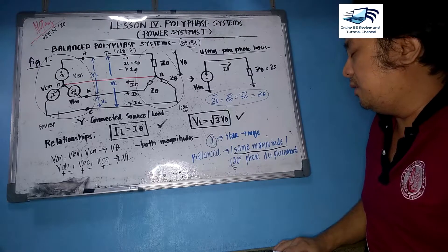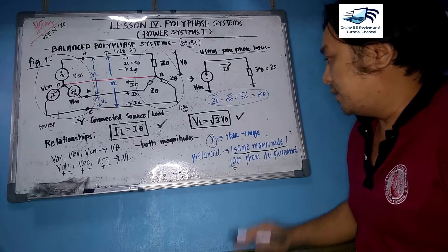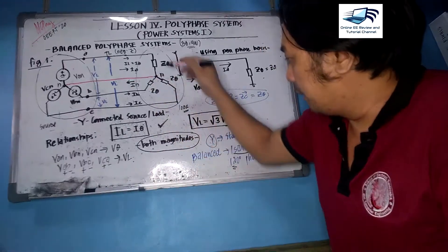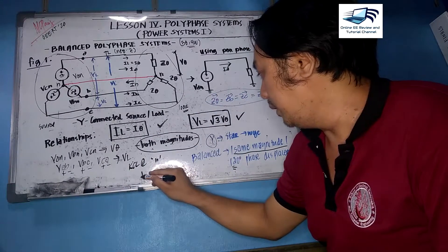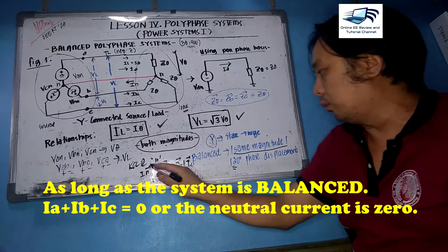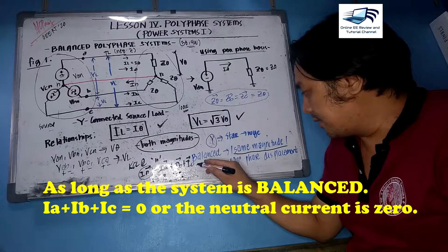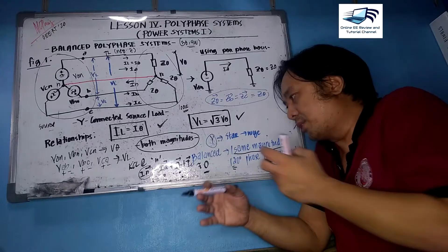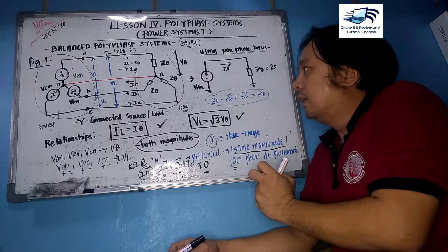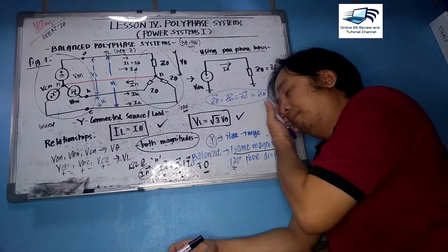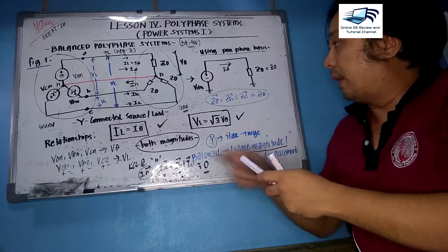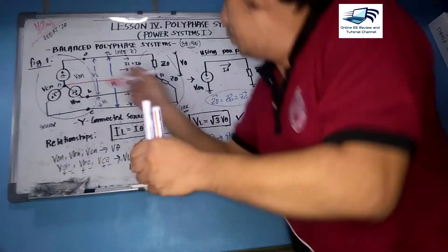The voltage relationship is VL equals the square root of 3 times V-phase — magnitudes only. By KCL at point N, if we add the vectors of the line currents they equal the neutral current, and since the system is balanced this is approximately zero, meaning the neutral conductor carries zero current. This allows us to use per-phase analysis — we use one phase of the system analyzed using circuit analysis.